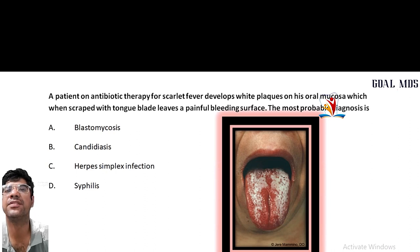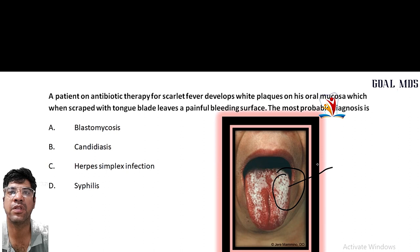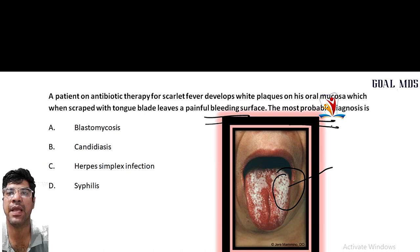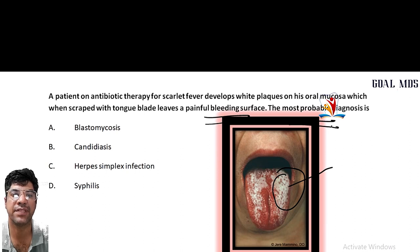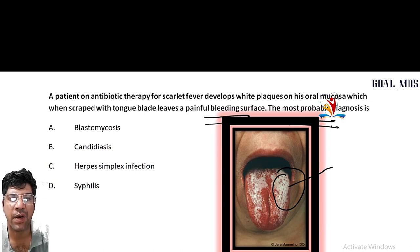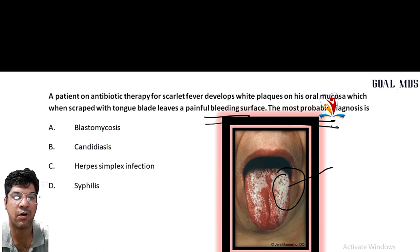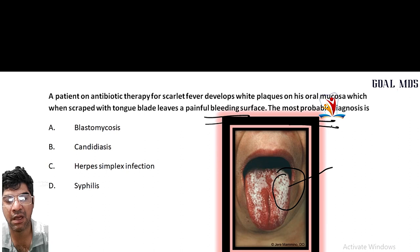A patient on antibiotic therapy for scarlet fever develops white plaques on his oral mucosa which, when scraped, reveal painful bleeding surfaces. The most common diagnosis is oral candidiasis (thrush) — a fungal infection caused by Candida species, mainly Candida albicans.